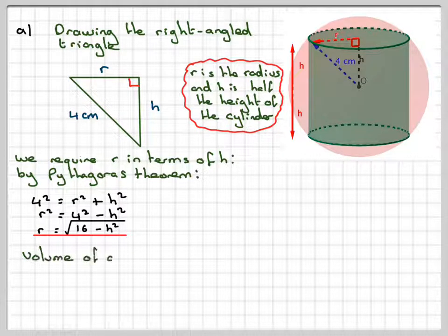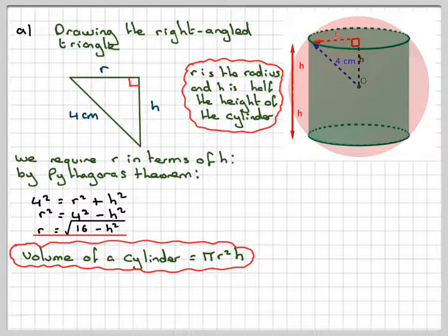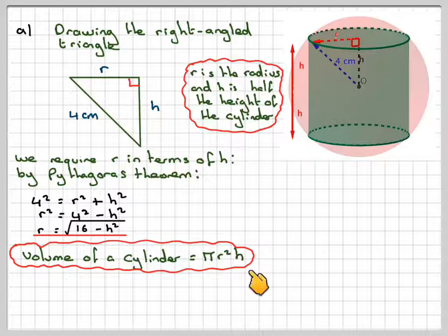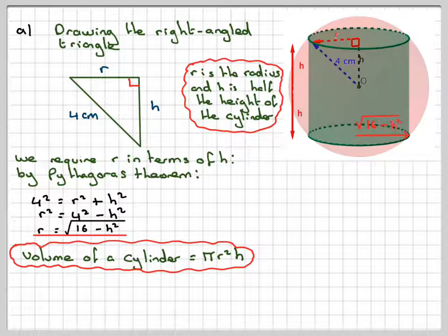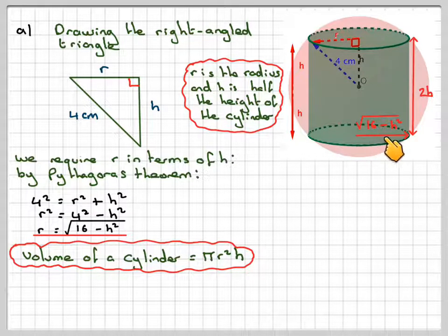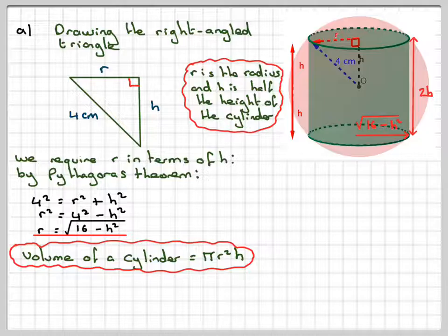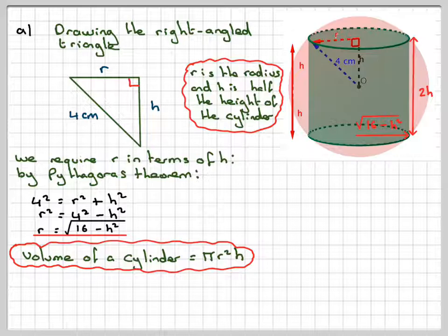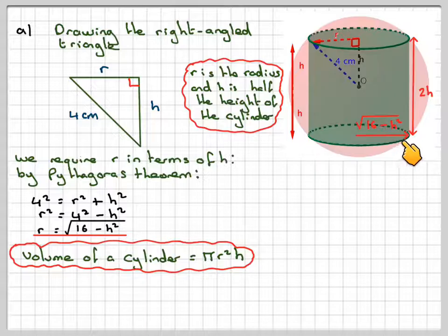So the volume of the cylinder is π r squared h. But the h in this case is going to be the whole height of the cylinder. So h is going to actually be 2h. So the height of the cylinder is going to be 2h. This here, r, is going to be 16 minus h squared. I'll just repeat that for you. This is going to be, this height here is going to be 2h. And the radius here is going to be 16 minus h squared.